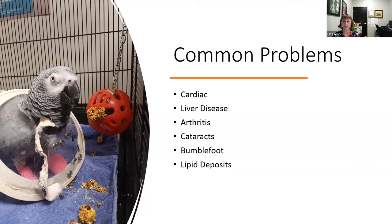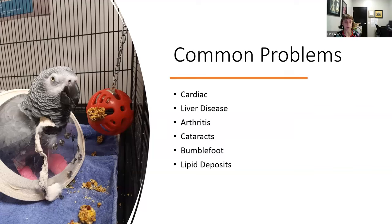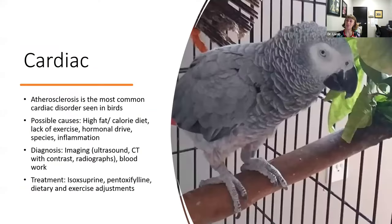I want people to take away that the definition of a bird being a senior or geriatric is going to be different from one individual to the next. There's no hard and fast rule — it's a little nebulous. We have to take multiple things into consideration. Some common problems we see as birds age include: cardiac disease, liver disease, arthritis, cataracts, bumblefoot, and lipid deposits on the corneal surface.